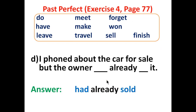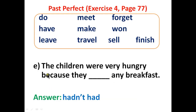Number D: 'I called about the car for sale, but the owner had already sold it.' Number E: 'The children were very hungry because they hadn't had any breakfast.'